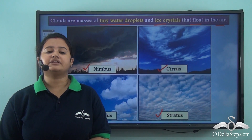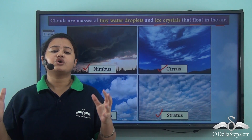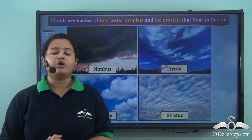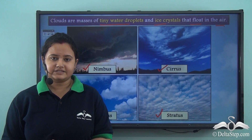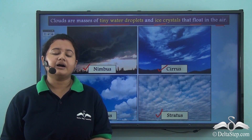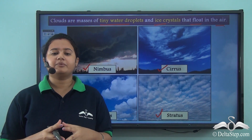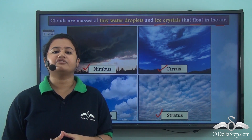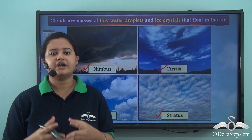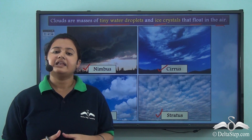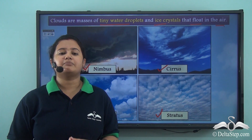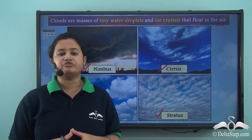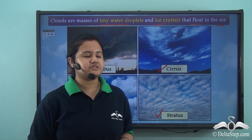Clouds are the most common form of condensation, but apart from clouds there are other forms of condensation as well. Let us discuss about each of those types.